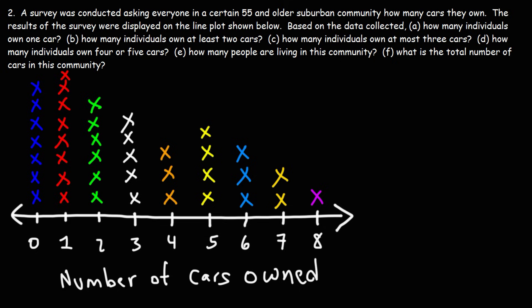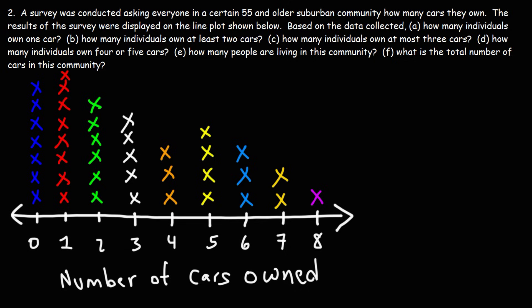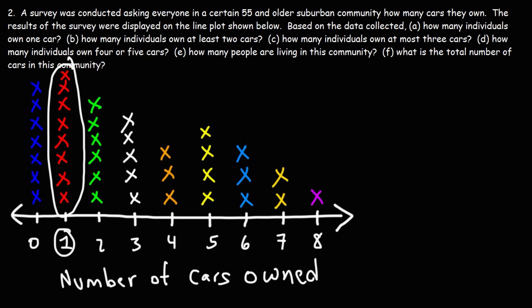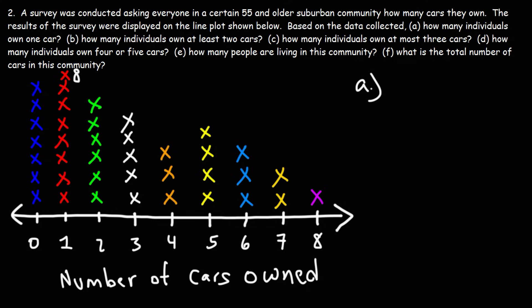Based on the data collected, how many individuals own one car? On the horizontal axis we have the number of cars owned, and going up we have the number of individuals who own such cars. So for one car, we count the number of X's there, and that is eight. So eight individuals responded to this survey indicating they only own one car.